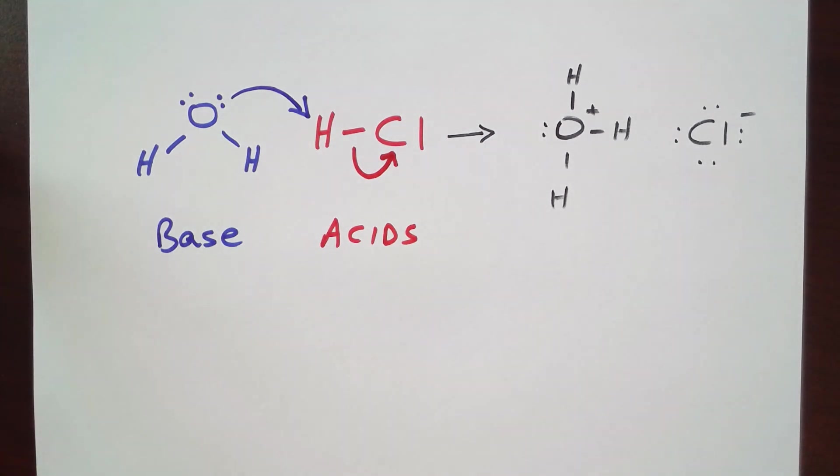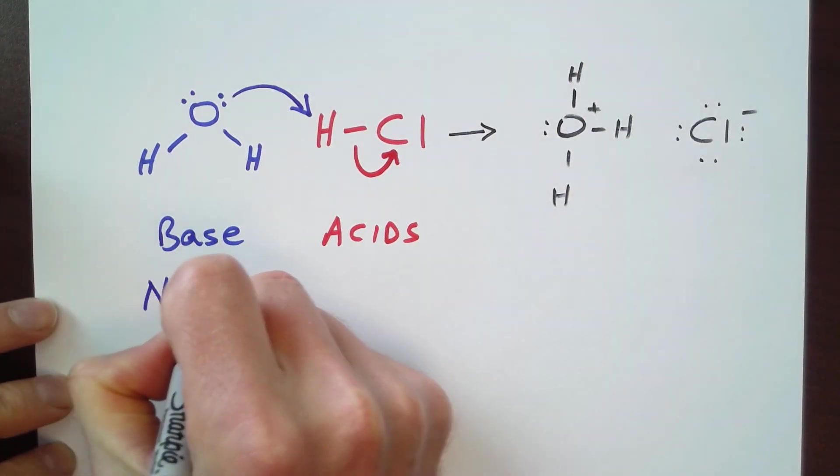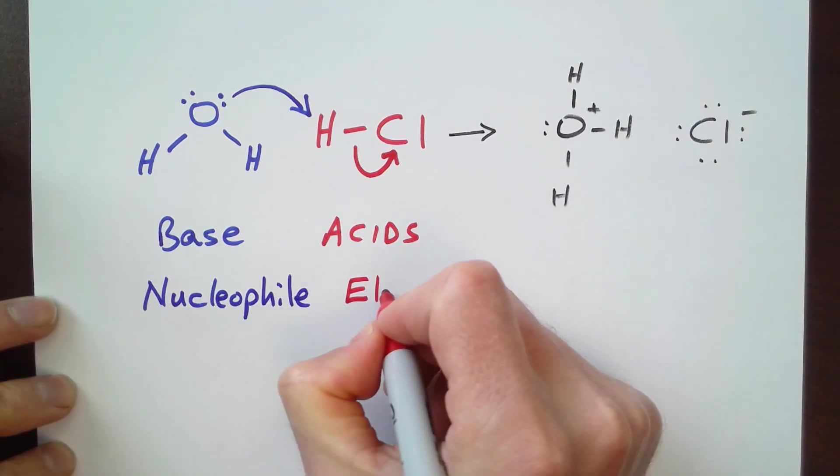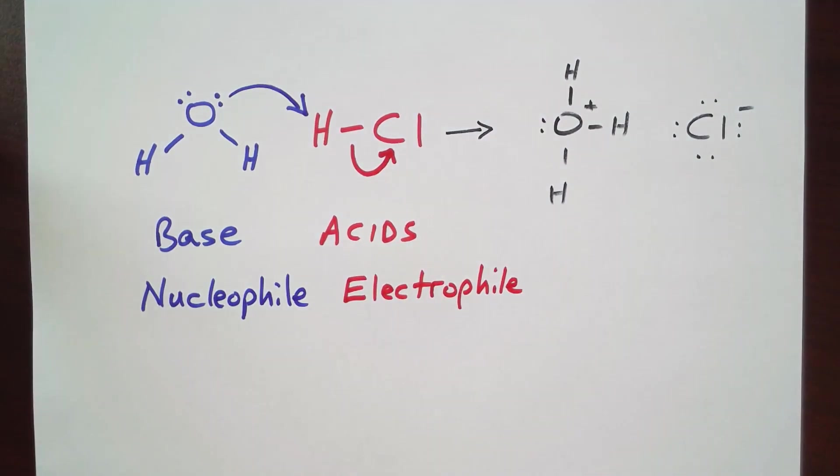In this next chapter, we're going to classify these a little differently. Instead of thinking about these as acids and bases, we're going to think about these as nucleophiles and electrophiles. A nucleophile is nucleus-loving, that is, it loves positive places.